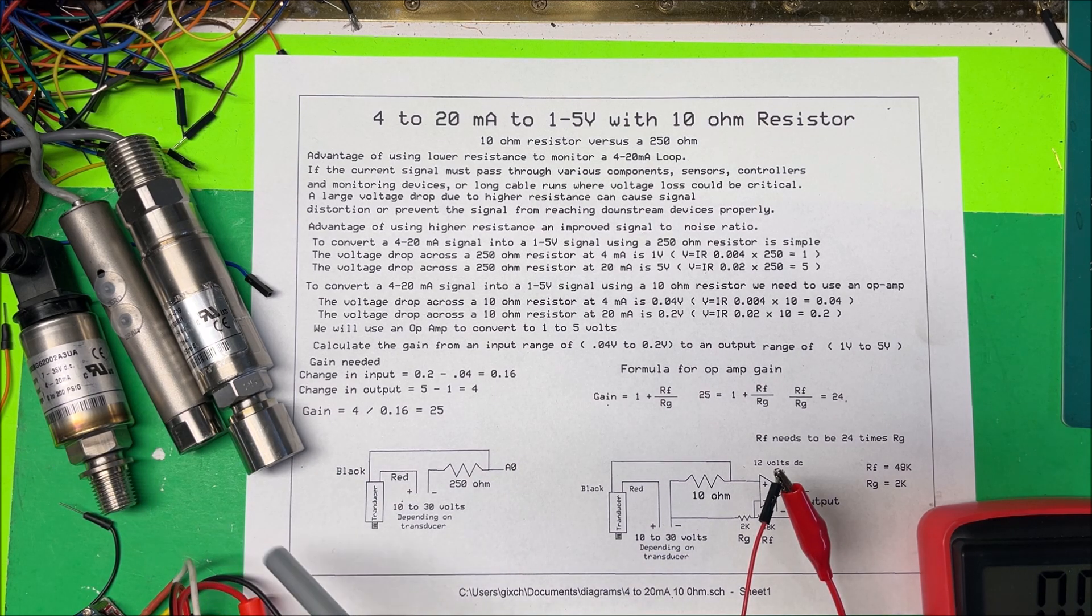But we're going to do it with a 10 ohm resistor. The advantage of using a 10 ohm resistor is that if the current must pass through a bunch of different components, sensors, controllers and monitoring devices, or you have a long cable run, then a large voltage drop due to higher resistance can cause signal distortion or prevent the signal from reaching its downstream device properly.